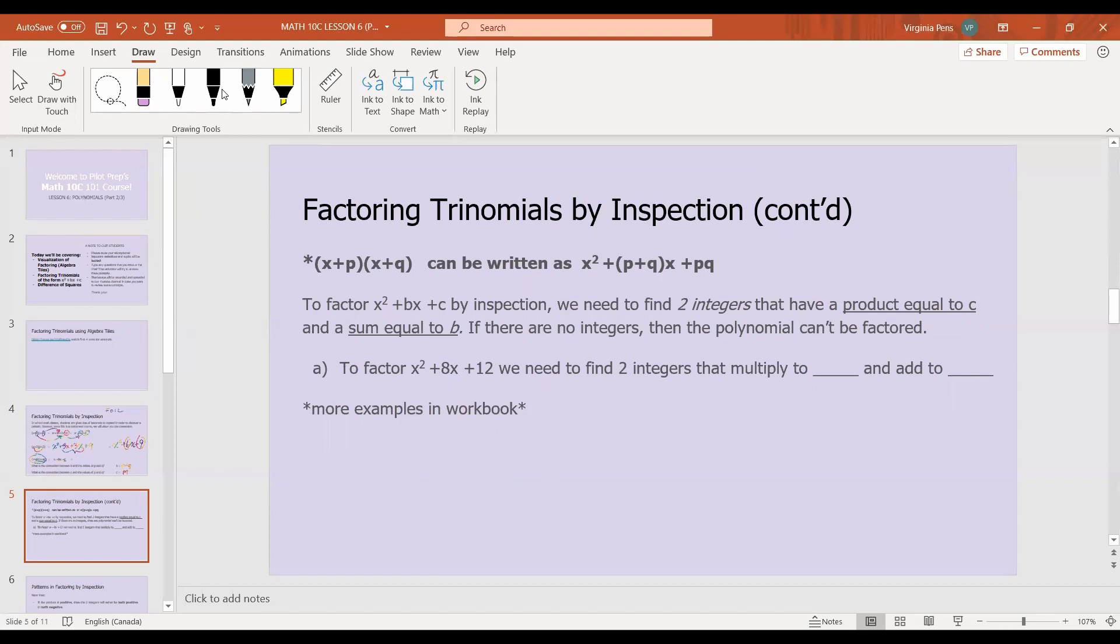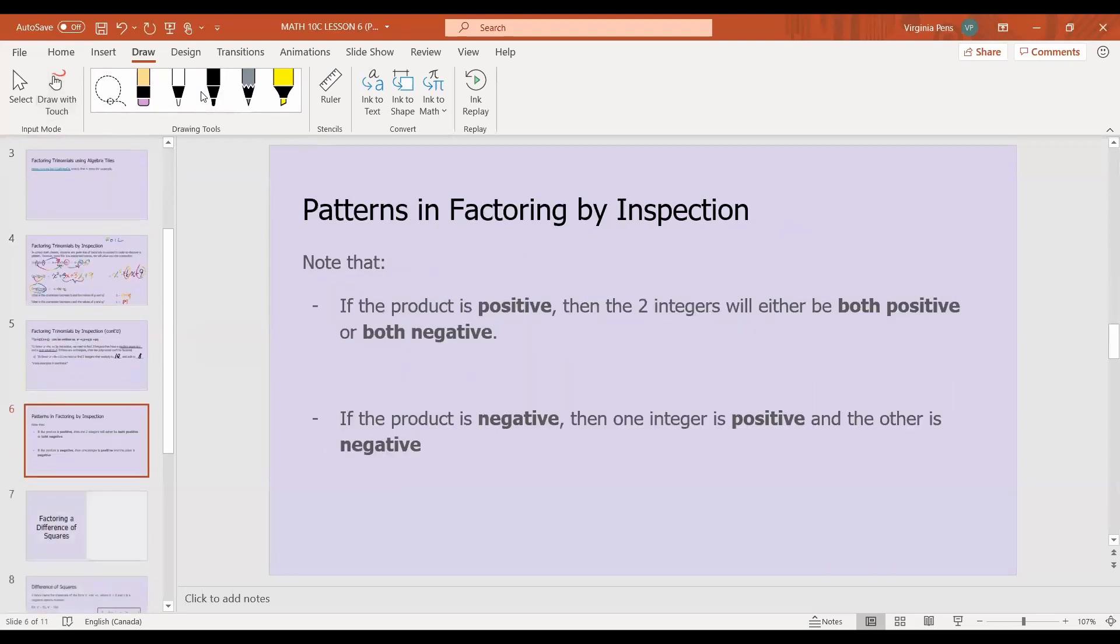So to factor x squared plus 8x plus 12, we need to find two integers that multiply to get the c value, which in this case is 12, and add to get the b value, which in this case is 8. There are a lot more examples in the workbook, so if you aren't confident after this lesson, or you want to do more practice, then you can always refer to the workbook.